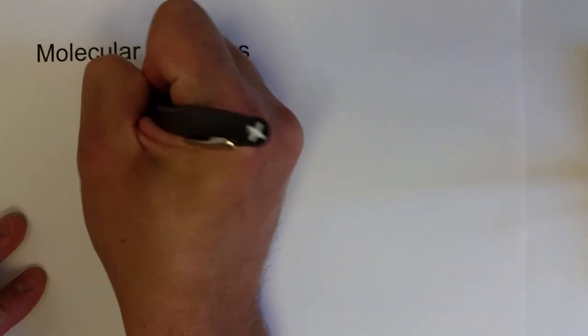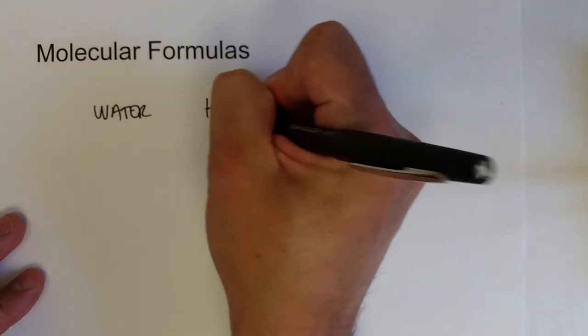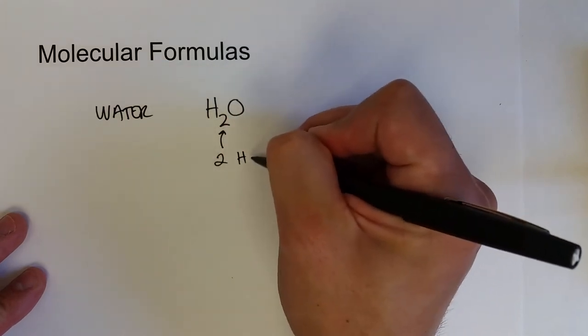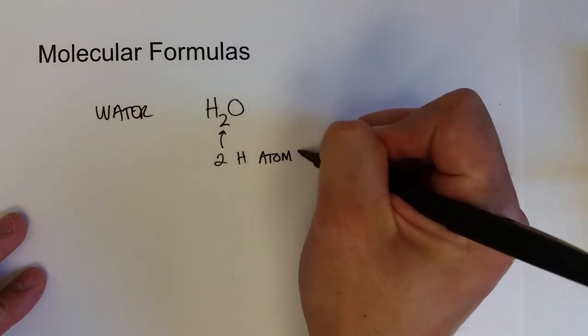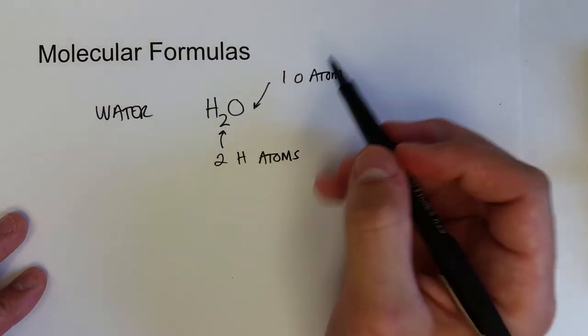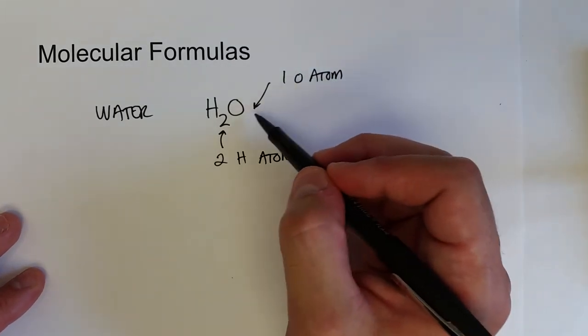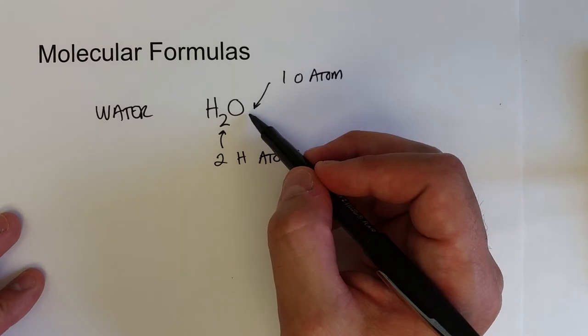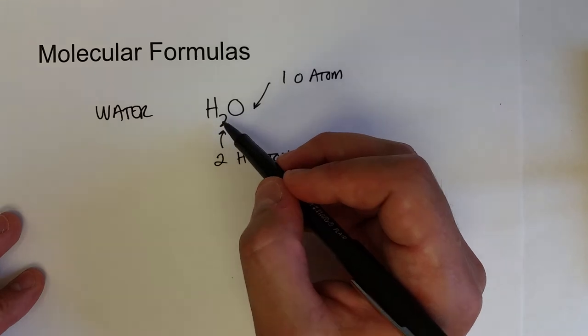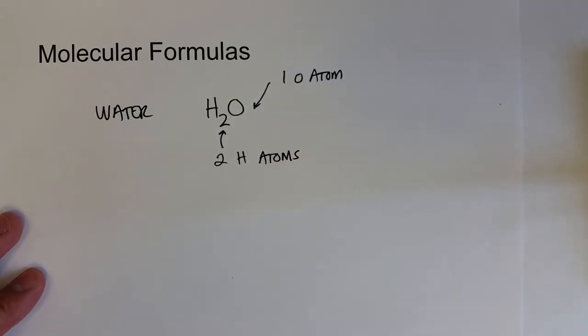But what we do is we show molecular formulas in this fashion. Say we have water. Water is, of course, H2O, and it's H2O because there are two hydrogen atoms and one oxygen atom. Now, whenever there's just one atom of any type, we don't need to show the subscript. So if you don't see a subscript there, we know there's just one of them. But any time you have more than one atom, you're going to show that in a formula by showing a subscript right to the right of that element's, the atom's elemental symbol.